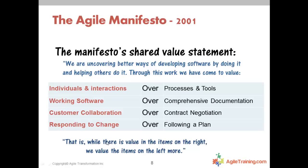Agile really centers around four value statements: people and their collaboration over processes and tools; working software — or value delivery, because agile is not only for software, it's a way of organizing and getting work done systematically; getting customers involved; and responding to change. These are what we call value drivers. We do still need processes, tools, documentation, contracts, and plans — but we've historically over-focused on those management controls rather than actually delivering value.